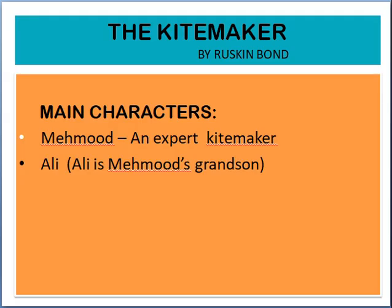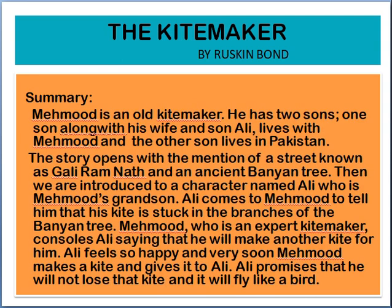In the story we have two major characters. One is Mahmood, who is an expert kite maker. The other character is Ali, who is the grandson of Mahmood. Mahmood lives with his son — he had two sons. One son lived with him, and his grandson is Ali. The other son lives in Pakistan.